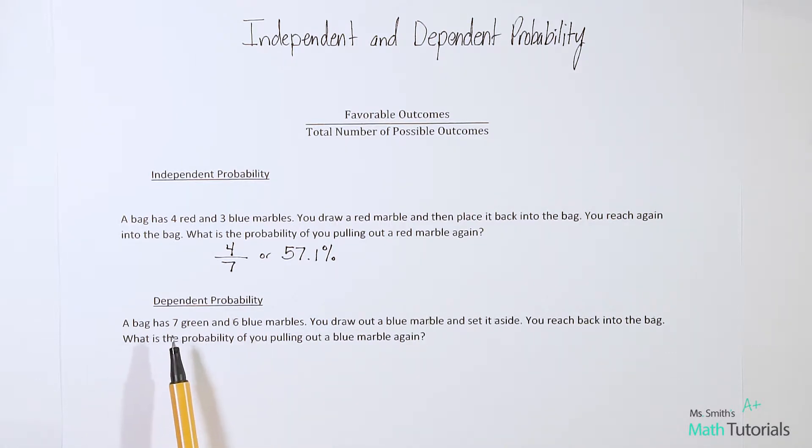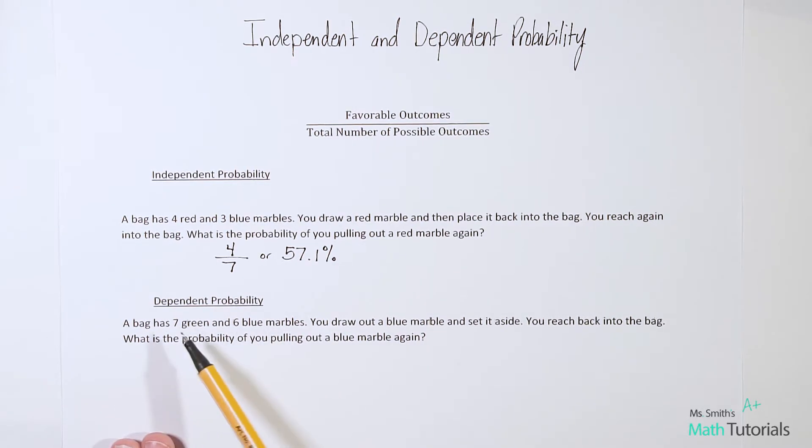So this one says a bag - so we're talking about a different bag now. It has seven green and six blue marbles. You draw out a blue marble and you set it aside. You reach back into the bag. What is the probability of you pulling out a blue marble again? So the key feature here that makes this dependent probability is that we've pulled out a blue marble and we're setting it aside. We did not return it to the bag.